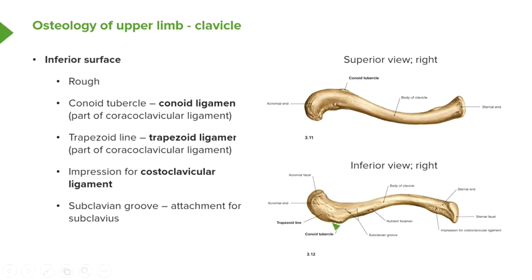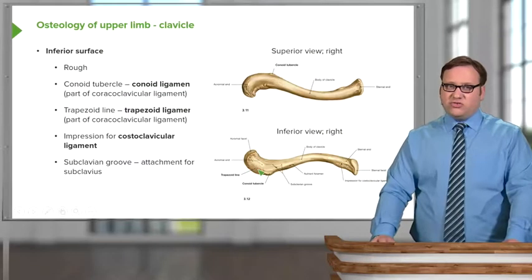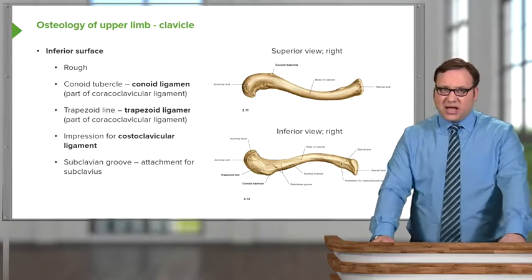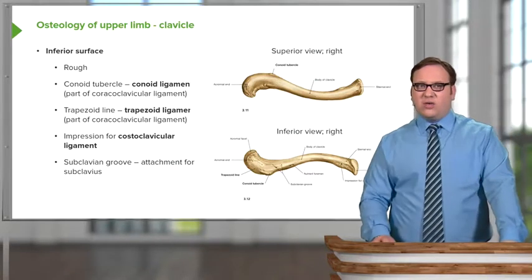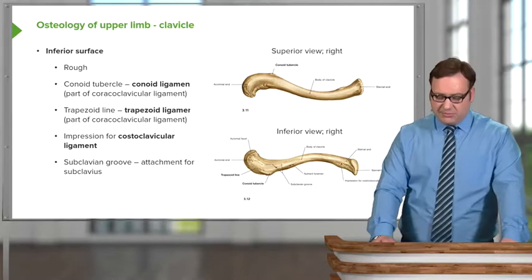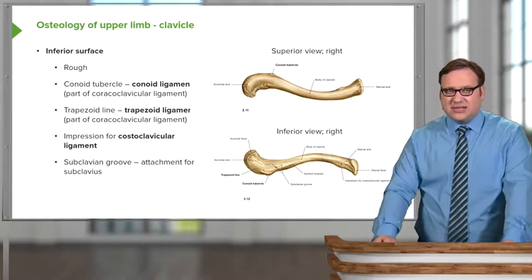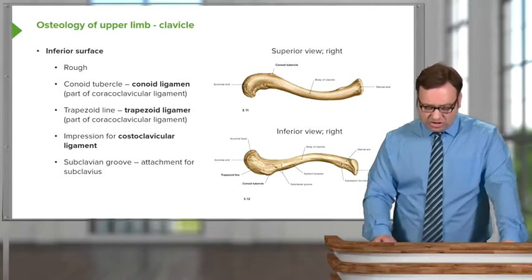Connecting the conoid tubercle to the acromial end is the trapezoid line — a slightly roughened area on the inferior surface. This is where the trapezoid ligament attaches, which is also part of the coracoclavicular ligament and is important in helping to stabilize the shoulder joint.